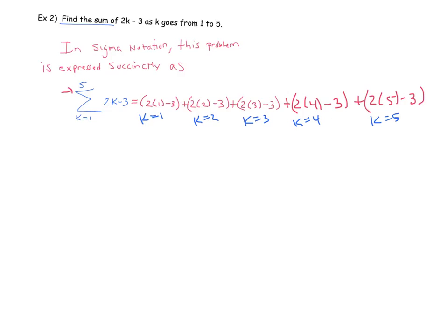Now I simply evaluate. 2 times 1 minus 3 is negative 1, then I get 1 plus 3 plus 5 plus 7. You add those all up and you get 15.